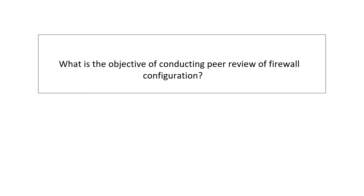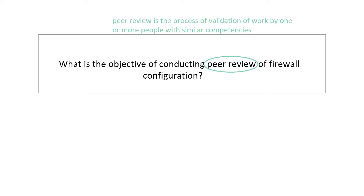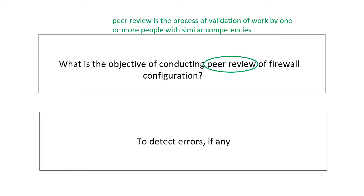What is the objective of conducting a peer review of firewall configuration? Peer review is the process of validation of work by one or more people with similar competency. The objective here is to detect errors and ensure firewall configuration is set as per the security policy of the organization.